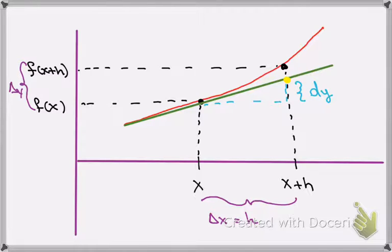And we notice that the change in height on the tangent line is dy. That's the change in height between this yellow point right here and this black point right here that's shared by the function and the tangent line. Notice that the change in height of the points on the function are delta y.